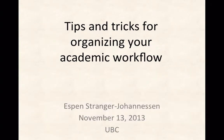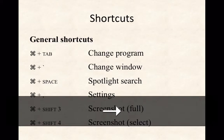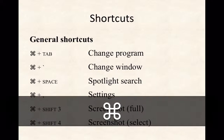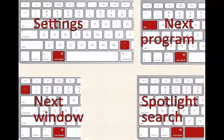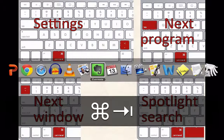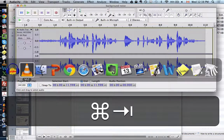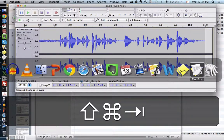Starting with some practical shortcuts. On Windows, the Command symbol is the equivalent of Control. Command+Tab switches between programs, and you can go back using Shift+Tab to return to the previous program — like switching back to a presentation.